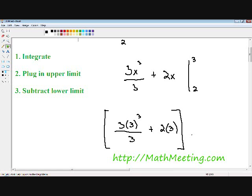Moving on to step 3: we want to subtract our lower limit. We do the exact same thing, except we plug in our lower limit everywhere there's an x. So everywhere there's an x, I'm going to plug in a 2. We have 3 times 2 cubed divided by 3, plus 2 times 2.